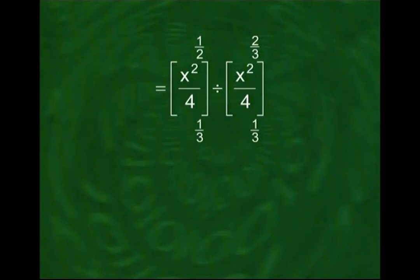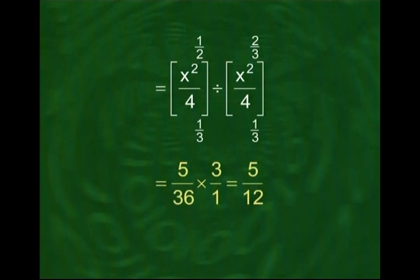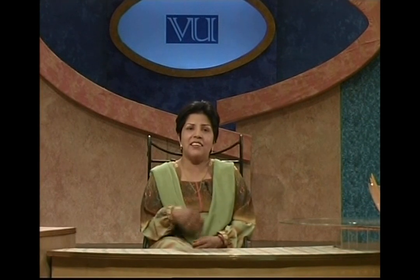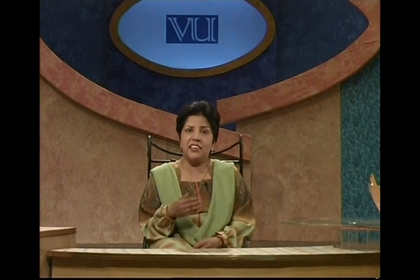Computing the integrals, we obtain x²/4 within the limits 1/3 to 1/2, divided by x²/4 within the limits 1/3 to 2/3, and computing this quantity, our final result is 5/12. This is the way we can compute any conditional probability in the case of a continuous probability distribution. This probability of 5/12 is obtained given the information that x is occurring in the range 1/3 to 2/3.